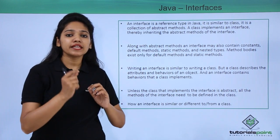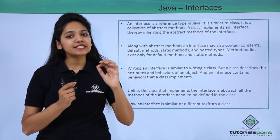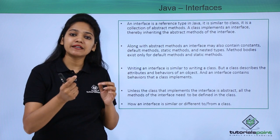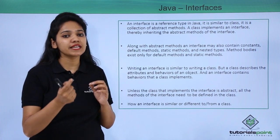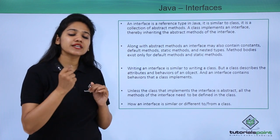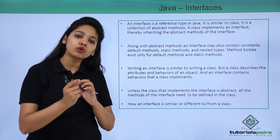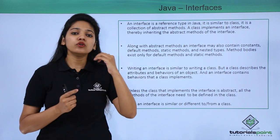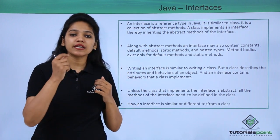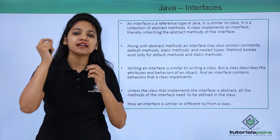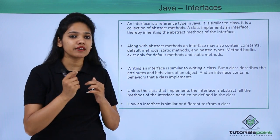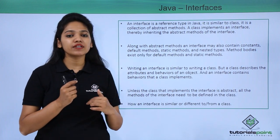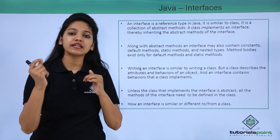The next difference: when extending classes, you can only extend one class. But when implementing interfaces, you can implement more than one. A class uses the extends keyword followed by the class name it inherits from, and can only extend a single class. Whereas interfaces allow multiple inheritance — if you have multiple interfaces declared, a class can implement all of them.